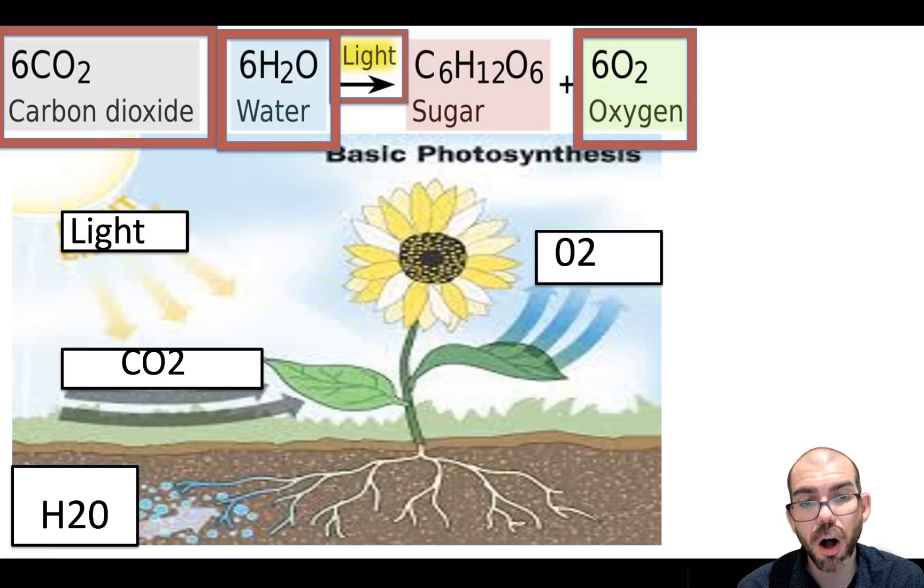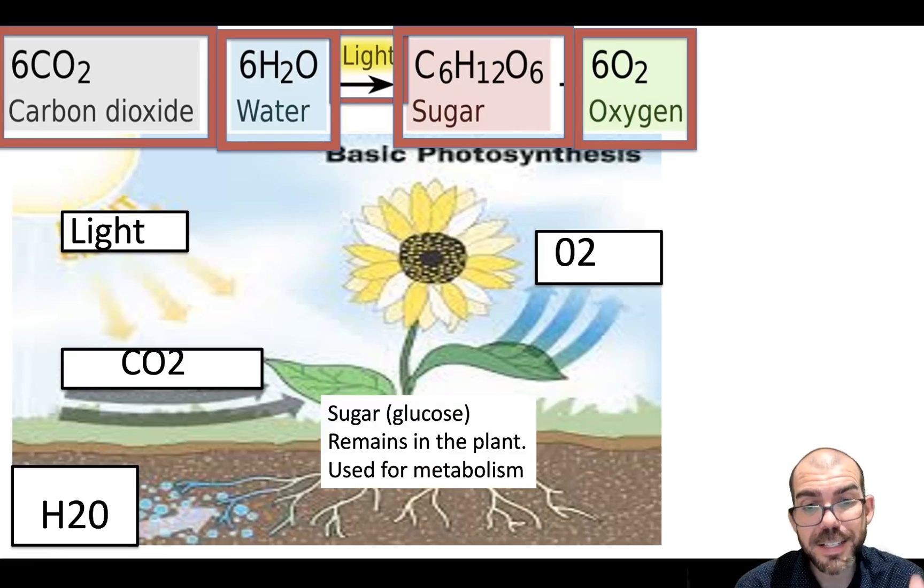How about the oxygen? All gas exchange happens at the leaf. CO2 in and out, oxygen in and out. And for the sugar, that's going to remain in the plant. The whole goal of photosynthesis is to synthesize sugars the plant's going to be able to use and break down through cellular respiration. Again, plants do both photosynthesis and cellular respiration. Photosynthesis makes a sugar. Cellular respiration breaks it down to produce ATP.